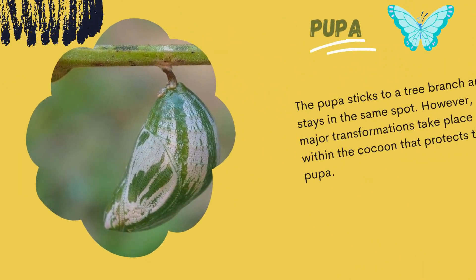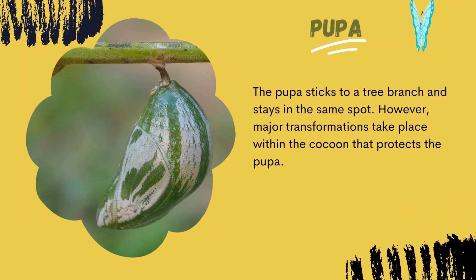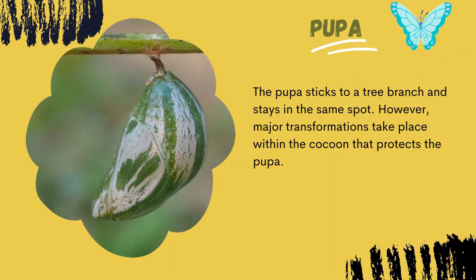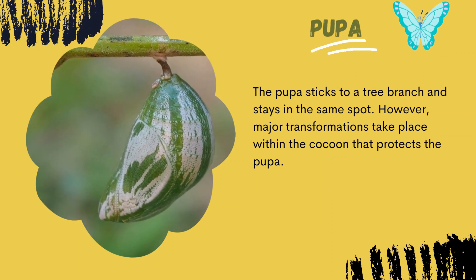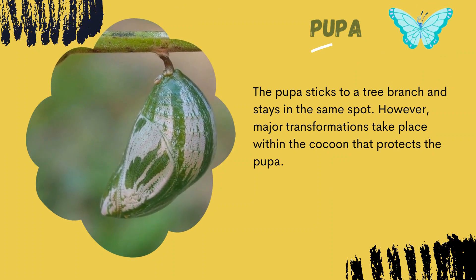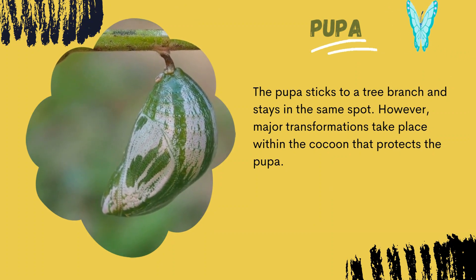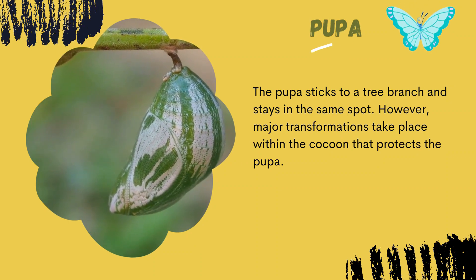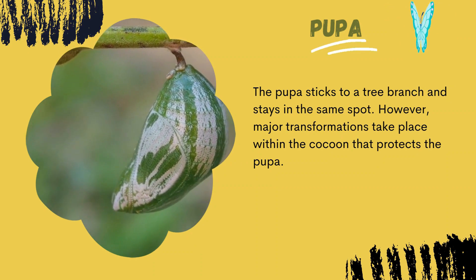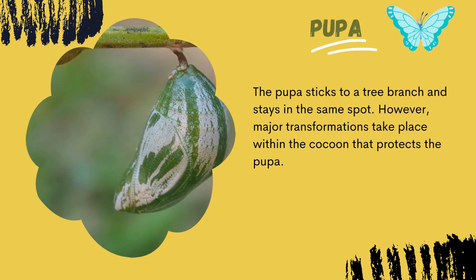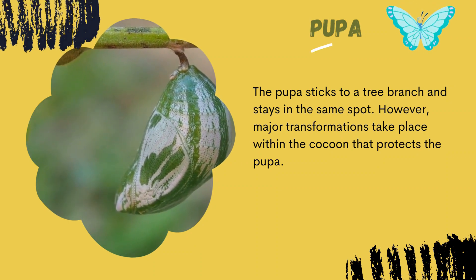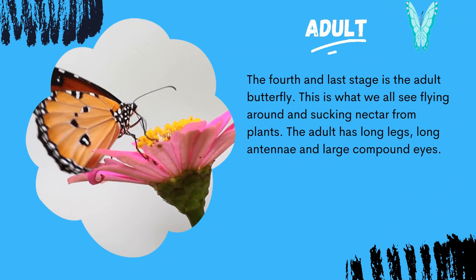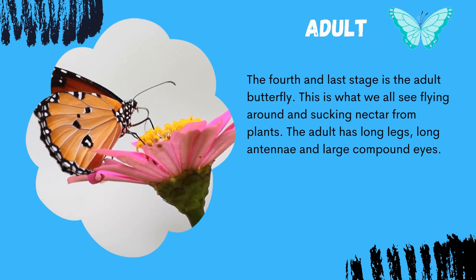However, major transformations take place within the cocoon that protects the pupa. Special cells within it start to grow and develop into legs, wings, eyes, and other parts that are found in an adult butterfly.